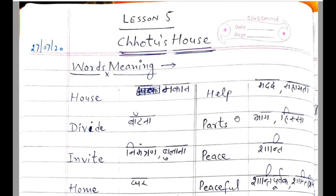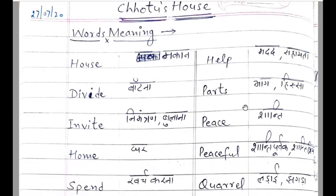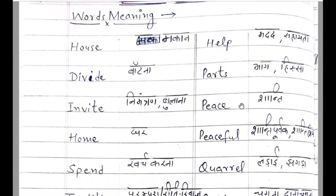House means मकान. Divide means बाटना, division करना, इस्सा करना.